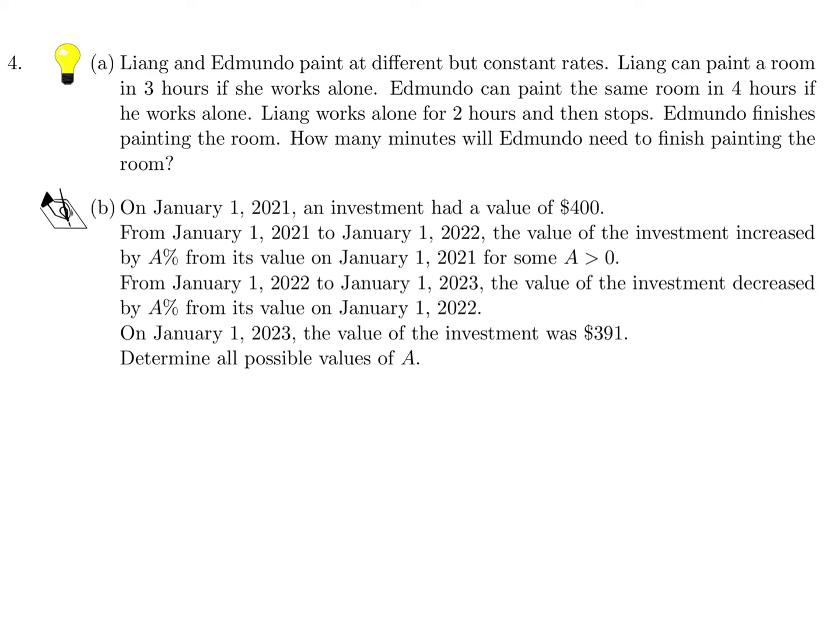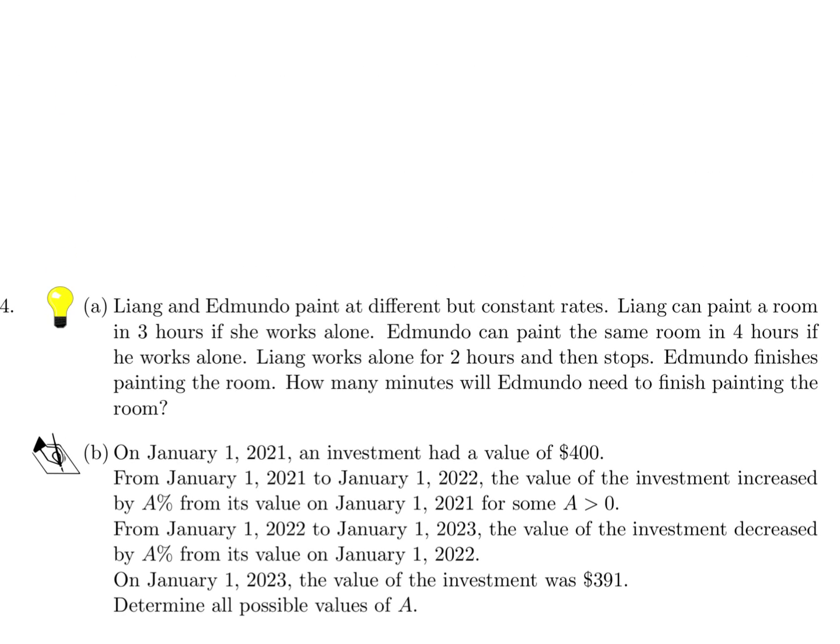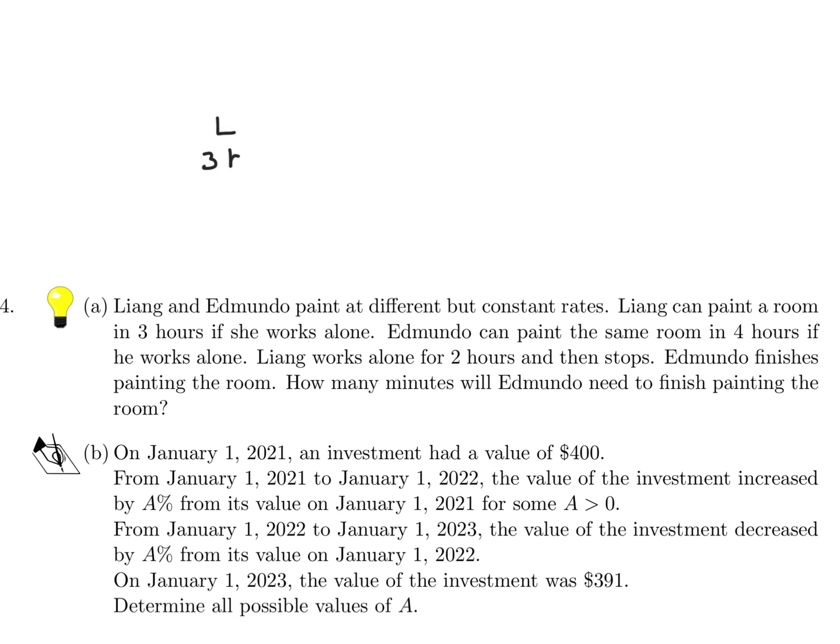Liang and Edmundo paint at different but constant rates. Liang can paint a room in three hours if she works alone. Edmundo can paint the same room in four hours if he works alone. Liang works alone for two hours and then stops. Edmundo finishes painting the room. How many minutes will Edmundo need to finish painting the room?